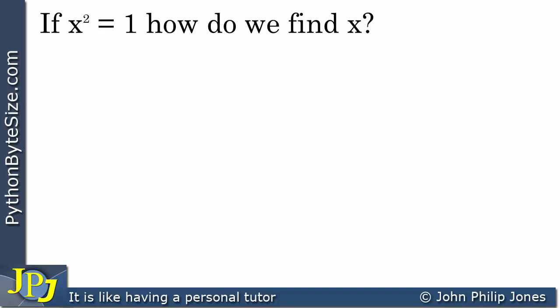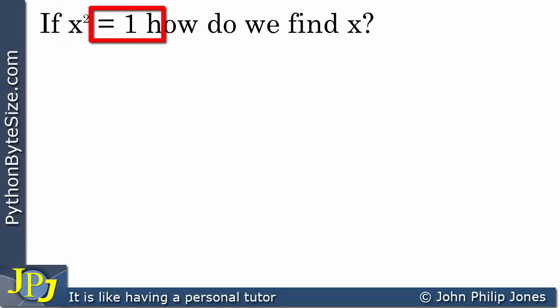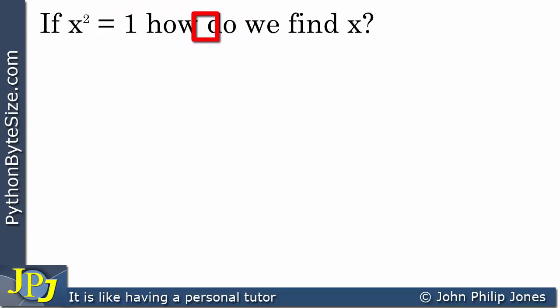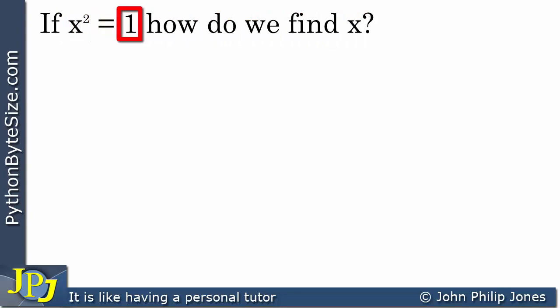What I'm going to do here is look at this: if x squared equals 1, how do we find x? In other words, how do we find a value of x such that when you square it you get the result of 1? Let's write this down. x squared equals 1. Now I need to get an equation where we have equals 0 on one side.